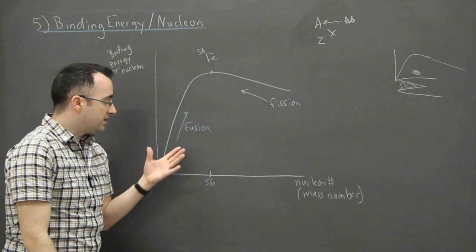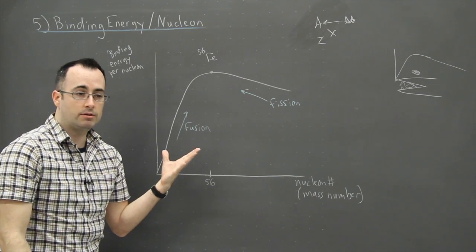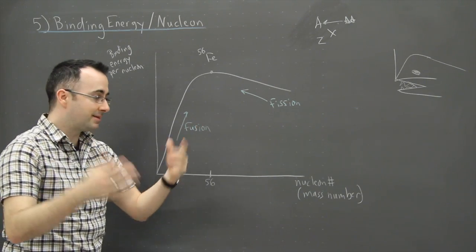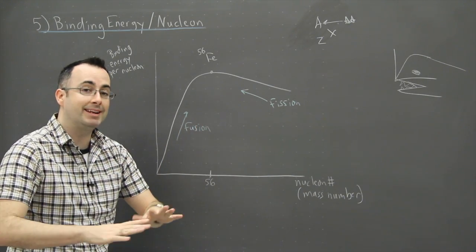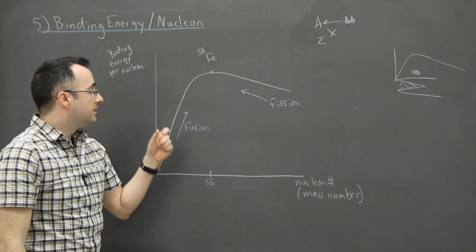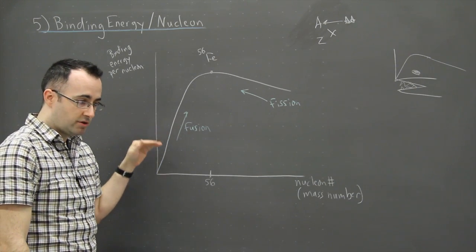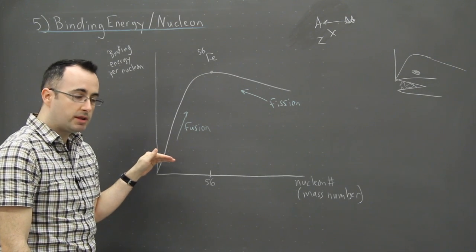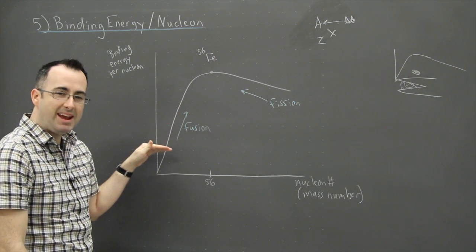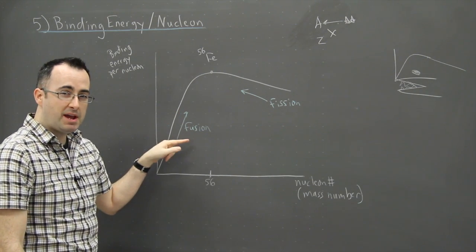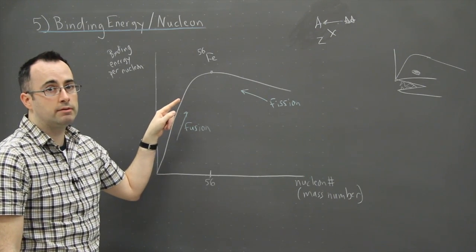If the products have a higher binding energy per nucleon than the reactant. In other words, you always want to do a reaction, or not you, but physics, science. I mean this is just what happens naturally and easily, is if you have the reactants which have a lower binding energy per nucleon than the products. In other words, if you're going to make something, it helps if the things you make have a higher binding energy per nucleon.